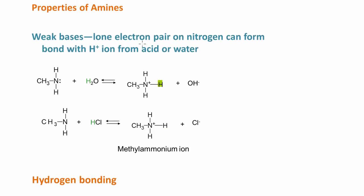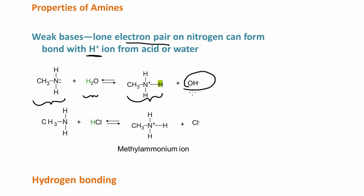Some properties of amines. Amines are weak bases, and that's because of that lone electron pair on the nitrogen atom. That lone electron pair can form a bond with a proton or a hydrogen ion from either acid or water. So here we have methylamine — when we put that into water, it's going to pick up a proton from the water and become this positively charged species, and we're left with the hydroxide ion. So amines act as weak bases, just like ammonia.